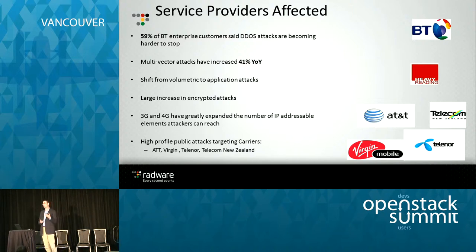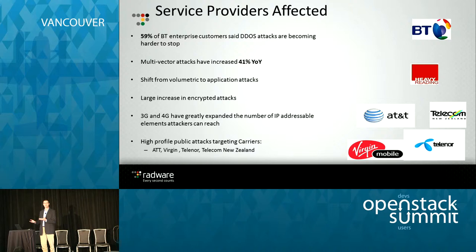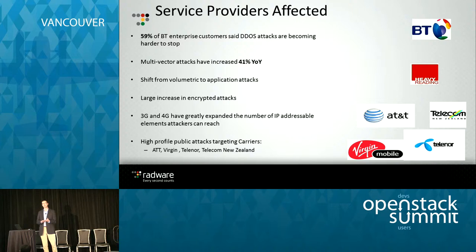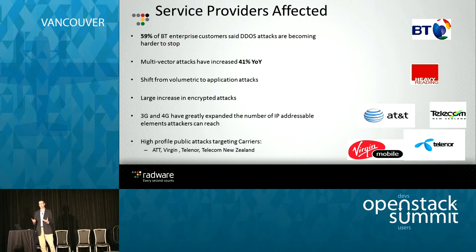We're also seeing a rise in multi-vector attacks. The first generation of DDoS attacks was around volumetric attacks — sending 10 gig of traffic down a 1 gig pipe to knock over your router. Now we're seeing multi-vector attacks where attackers go after both the physical pipe with a volumetric attack and also use protocols like web or SIP to attack application servers and take them down. The shift from volumetric to application requires a much more comprehensive look at the network.